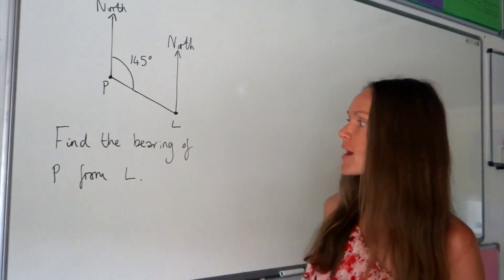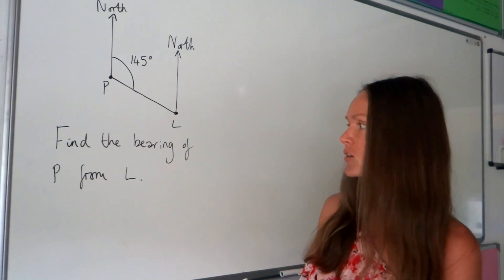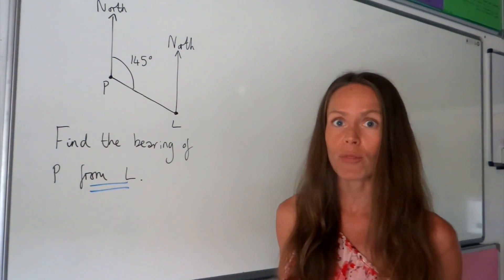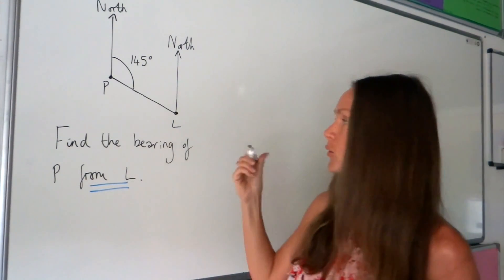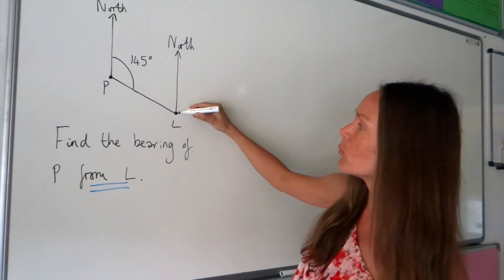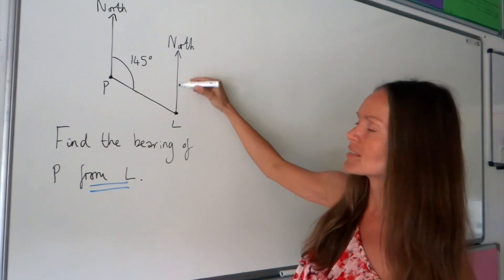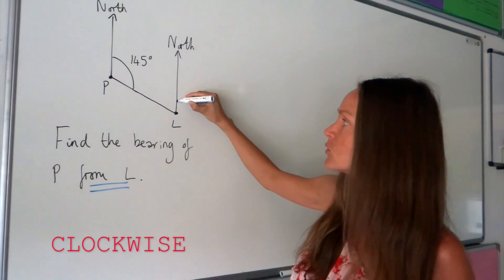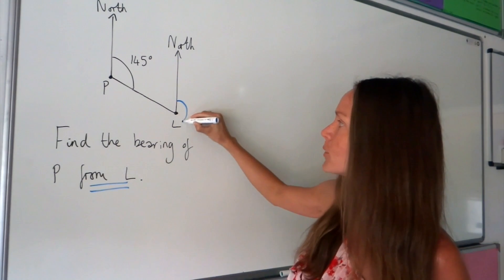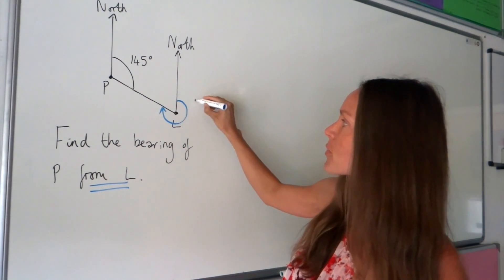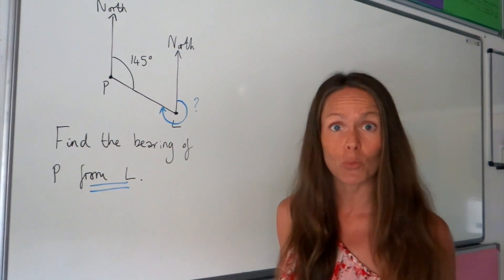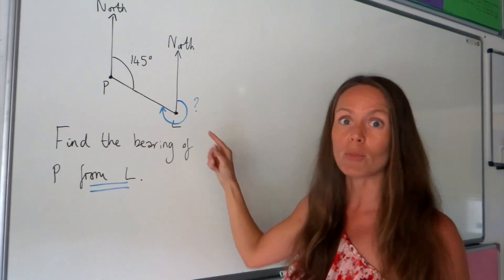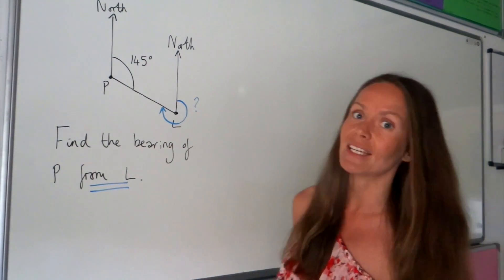In this first exam question we must find the bearing of P from L. Because it says 'from L' it means we have to measure the bearing from the north arrow of L. So you need to place your pen somewhere above the point L along the north arrow of L, and then draw clockwise around the point L until you hit the line that travels to P. Remember, bearings are always measured clockwise from the north arrow.